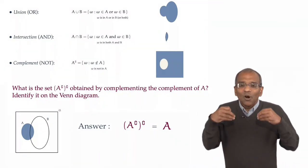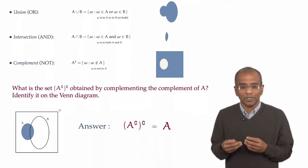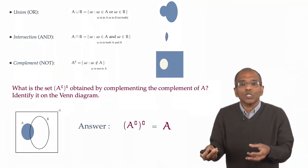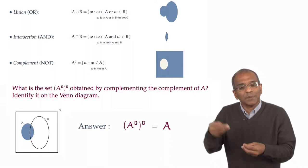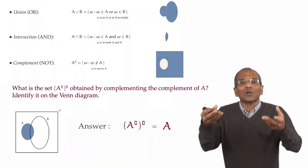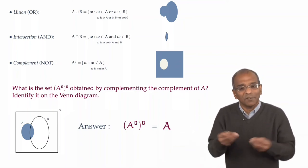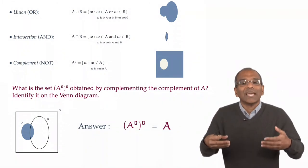This is the idea. And how do you verify this? Well, let's look at the complement of the complement. Any omega in the complement of the complement cannot be in the complement. But if it is not in the complement, then it must be in the original set. Therefore, every omega in the complement of the complement is in the original set, and vice versa. And therefore, the complement of the complement is A itself.